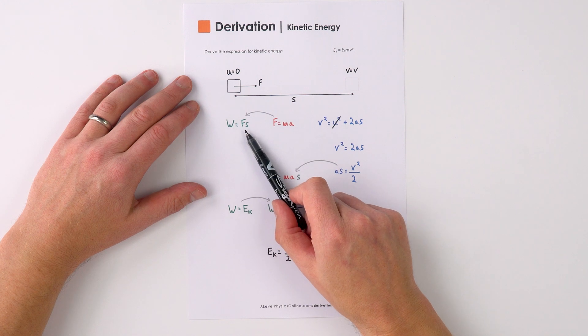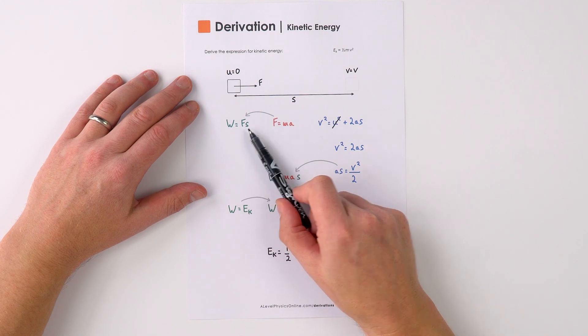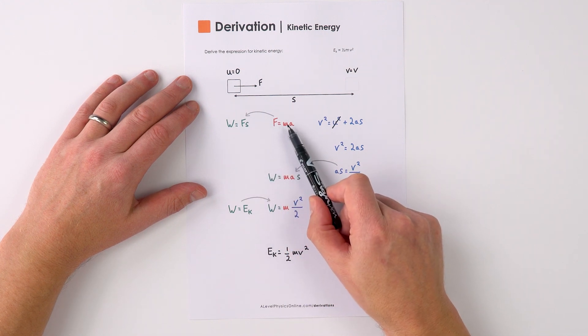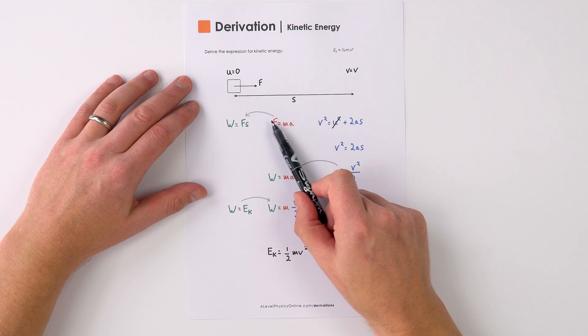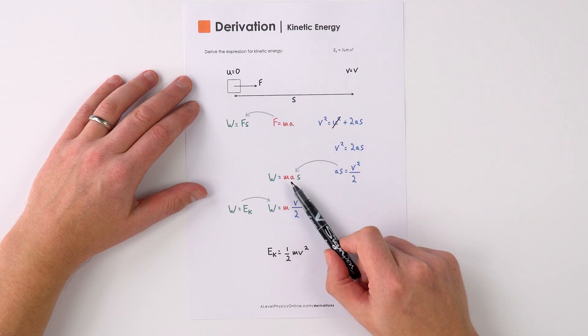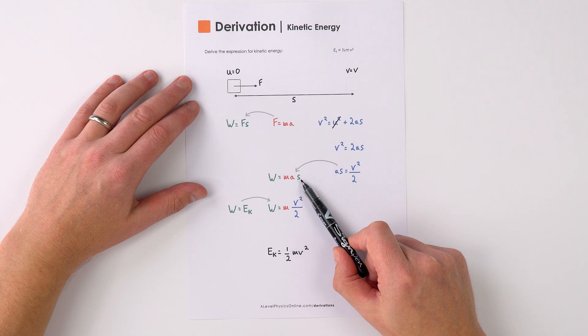Well, we know that the work done is going to be equal to the force times the displacement, and this force is equal to Ma, and therefore we can say that the work done is going to be Ma times S.